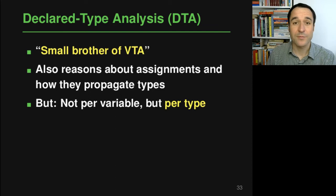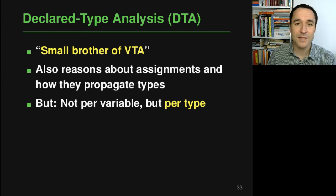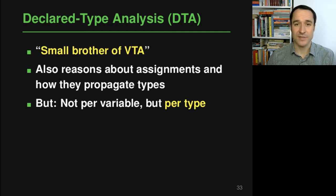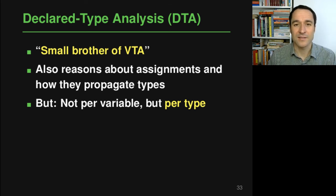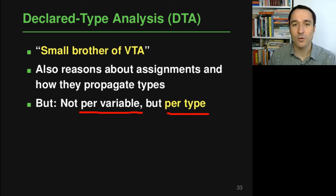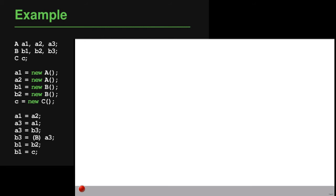The second algorithm is called declared type analysis (DTA), which can be seen as a variant or the smaller sibling of variable type analysis. It also reasons about assignments in the program but not based on all different variables and fields, but based on the types that are assigned to each other — per type rather than per variable — which makes the whole algorithm more scalable but also less precise.